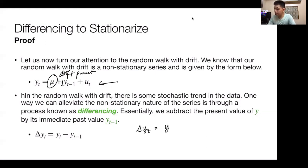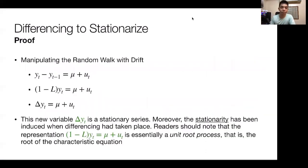One way we can alleviate the non-stationary nature of it is through differencing. We define differencing as just the change in y. If I subtract the past value from the present value, that's the difference of yt, somewhat like a growth or a change parameter. If you manipulate the random walk with drift, that's equal to mu plus yt minus 1 plus ut. If I transpose yt minus 1 to the other side, yt minus yt minus 1 equals mu plus ut.